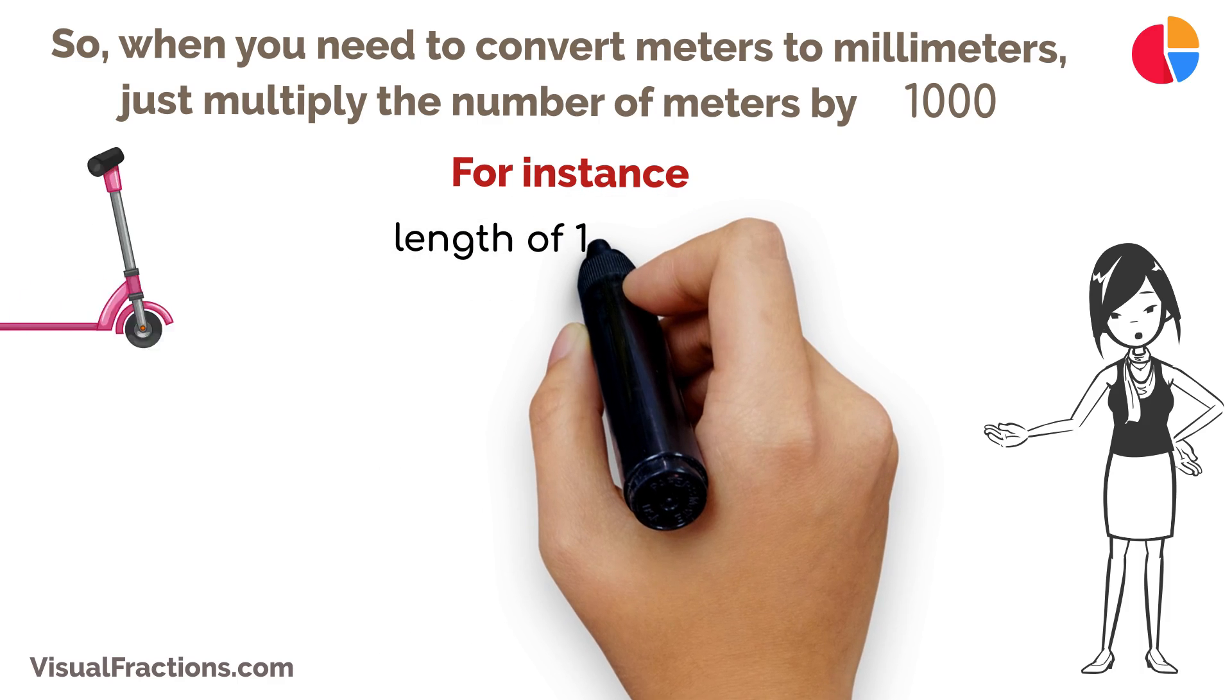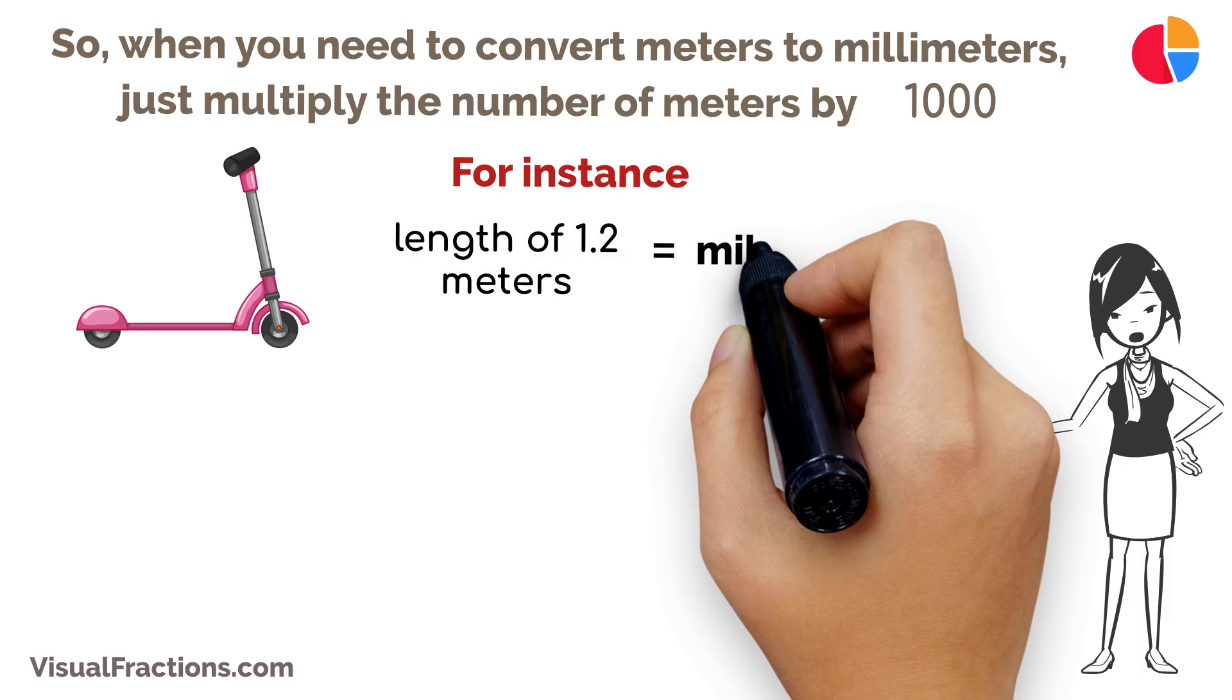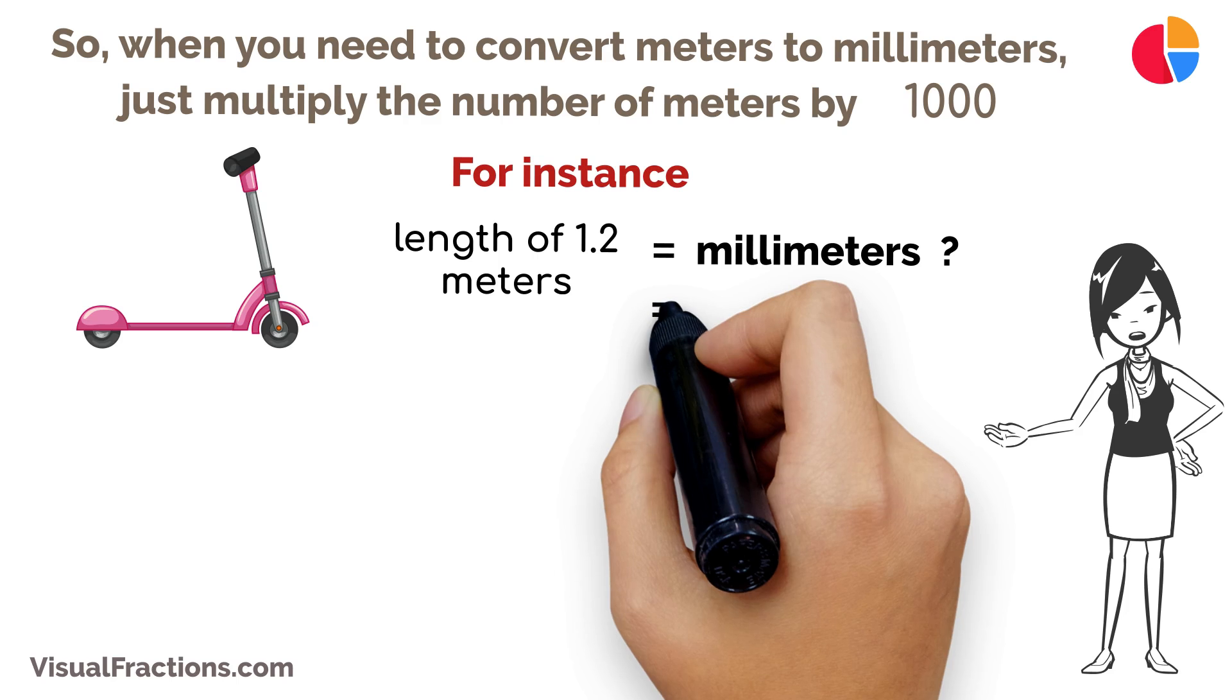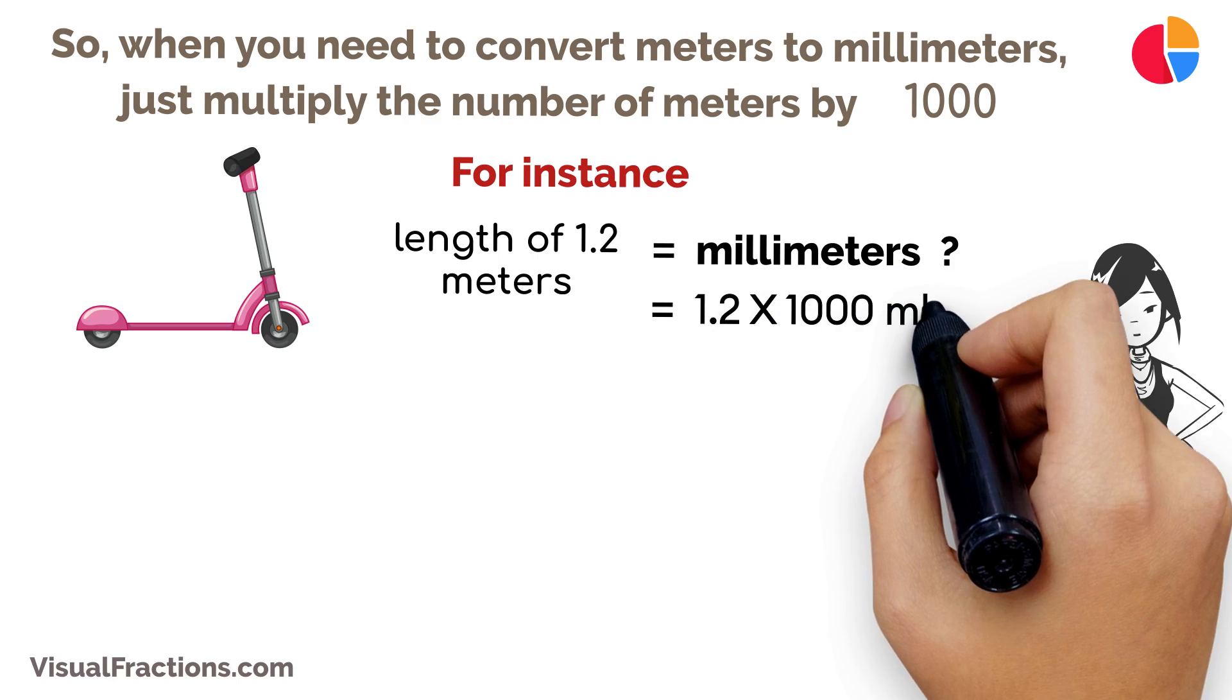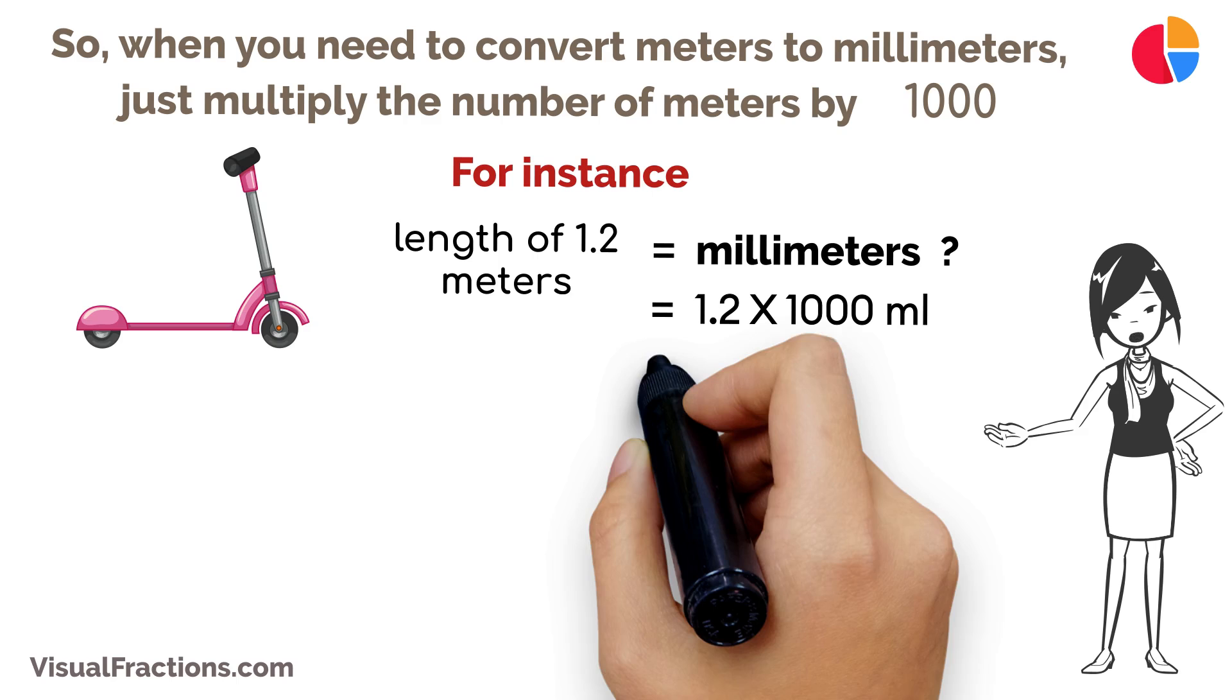For instance, if you have a length of 1.2 meters and you want to know how many millimeters it is, multiply 1.2 meters by 1,000. That gives you 1,200 millimeters.